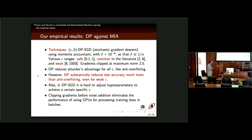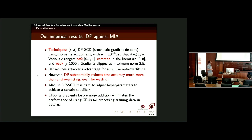Another problem is that when using differential privacy on gradients, it is very hard to adjust hyperparameters to achieve a specific target epsilon. You set a target and in the end achieve a different epsilon. Also, clipping gradients before noise addition eliminates the GPU batch-processing performance gains, increasing execution time. But the big thing is the loss of accuracy — differential privacy protects, but at a higher price in terms of accuracy than anti-overfitting techniques.